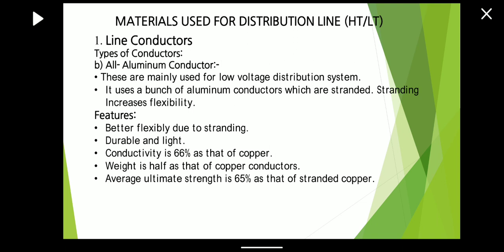Another type is the ACSR conductor, which stands for Aluminium Conductor Steel Reinforced. The AAC conductor has less tensile strength; this drawback is overcome by the ACSR conductor. It consists of an aluminium conductor having a central core of galvanized steel wire surrounded by stranded aluminium conductors. The steel wire increases the tensile strength, and the stranding increases the flexibility of the conductor. Comparing with the AAC conductor, ACSR is the better one.